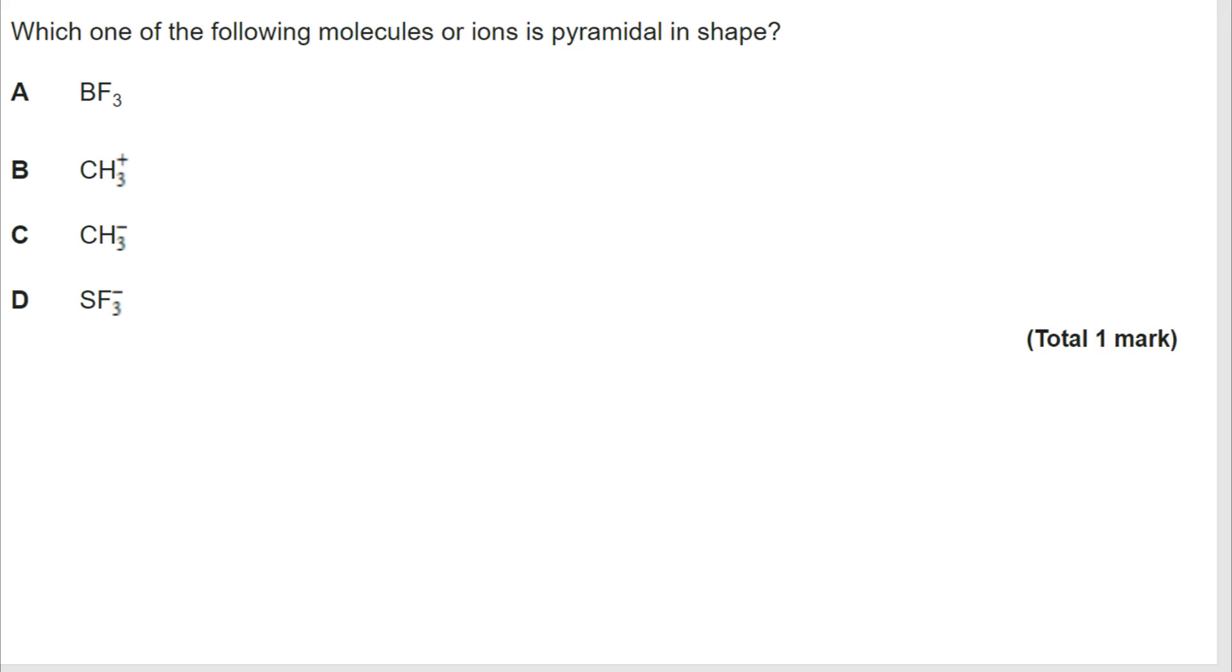And another shapes of molecules question, which you possibly do need to sketch out to be able to do this with confidence. Some of them you will know. Some of them might take a little bit more work. Let's take a look at A, BF3. Well, boron is in group three. So we're thinking three bonding pairs. That's trigonal planar, 120 degree bond angle, certainly not pyramidal.